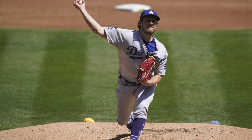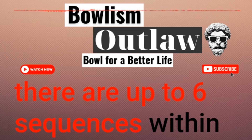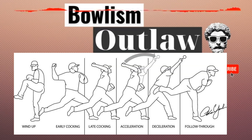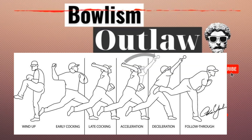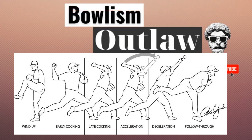There are some similarities between these two sports. In baseball, there are up to 6 sequences within a shot: the wind-up, the early cocking, the late cocking, acceleration, deceleration, and follow-through.